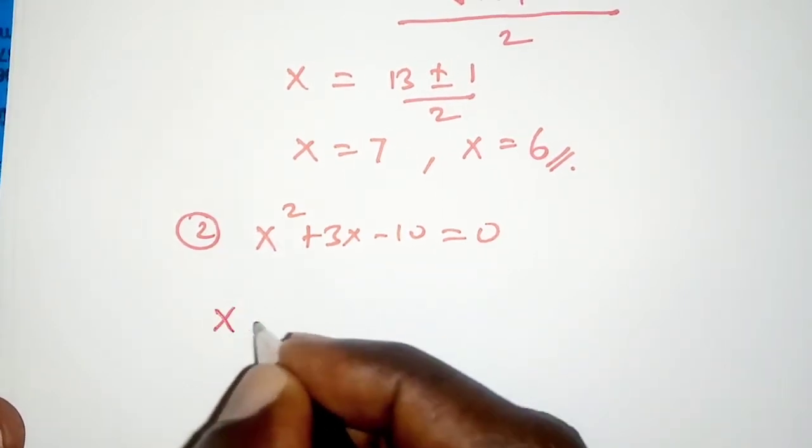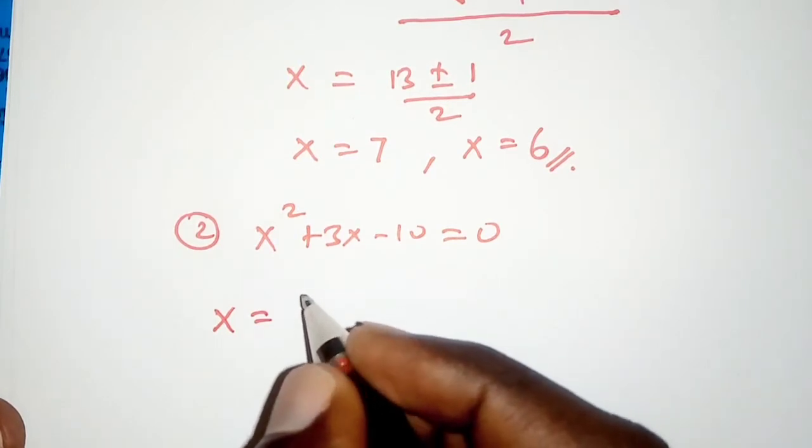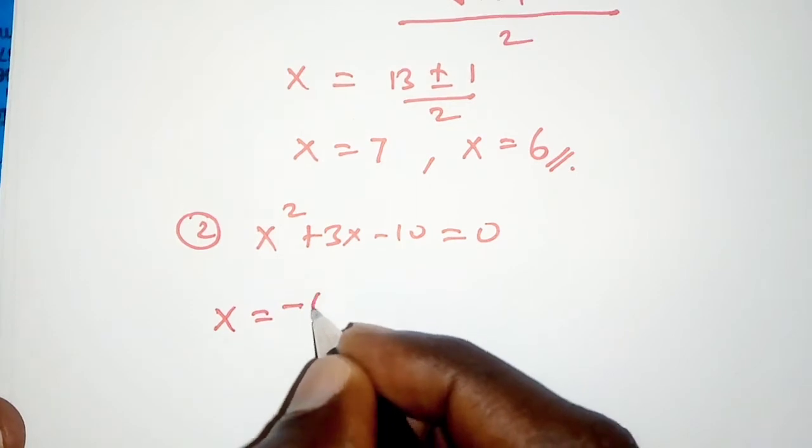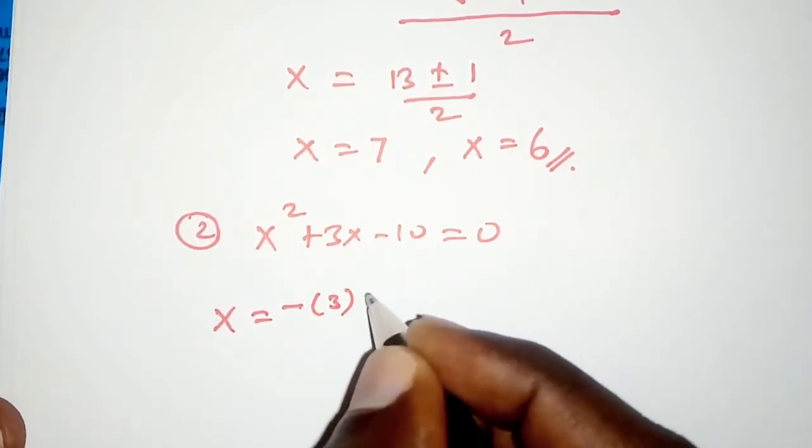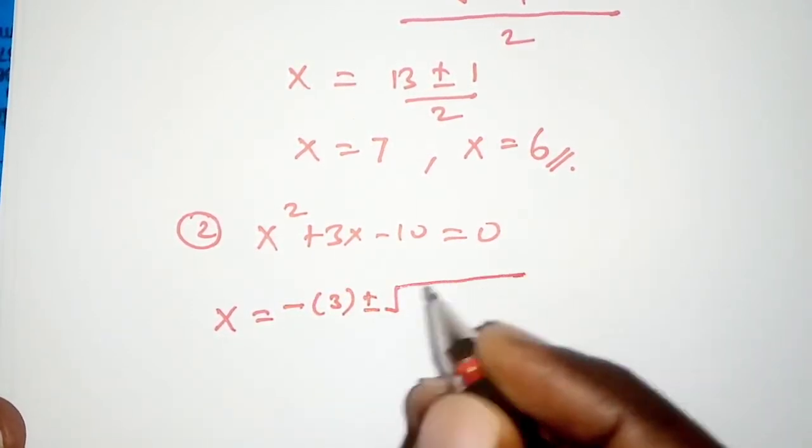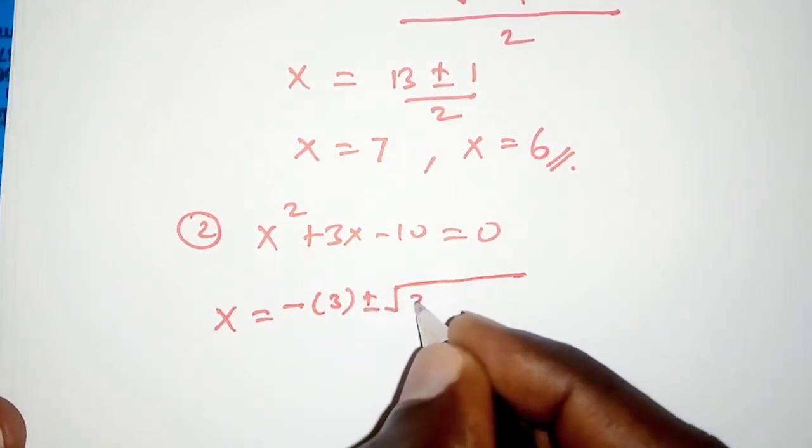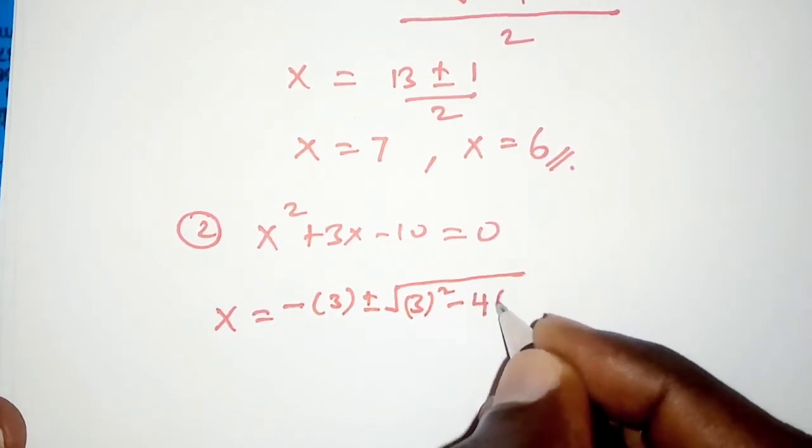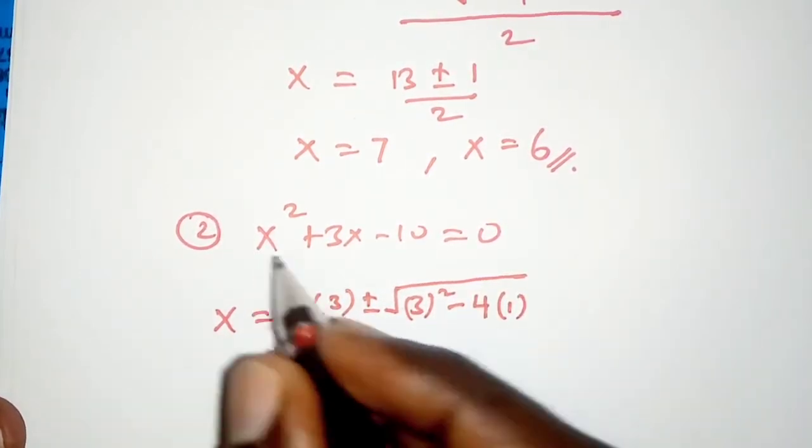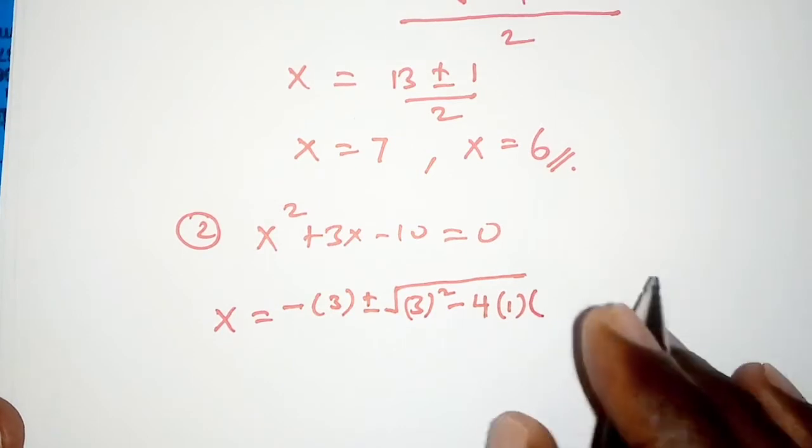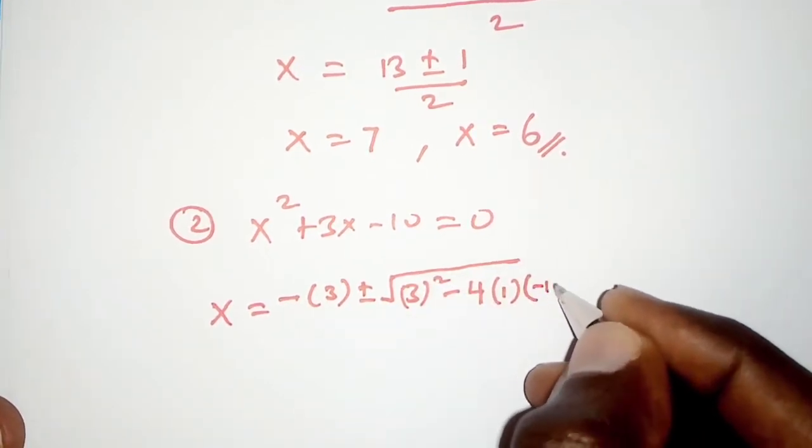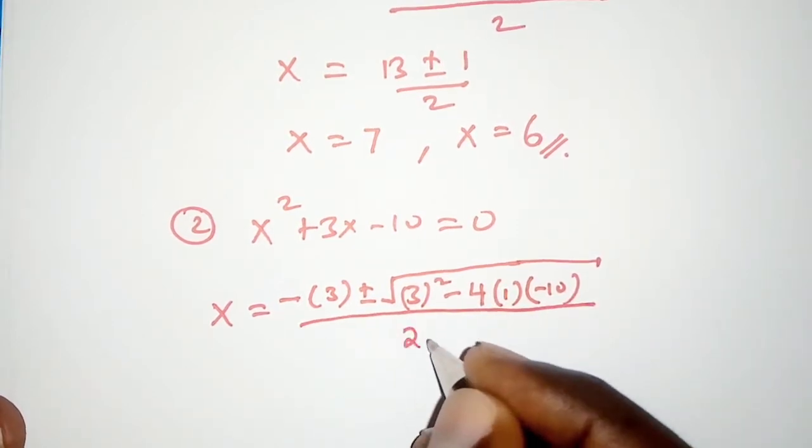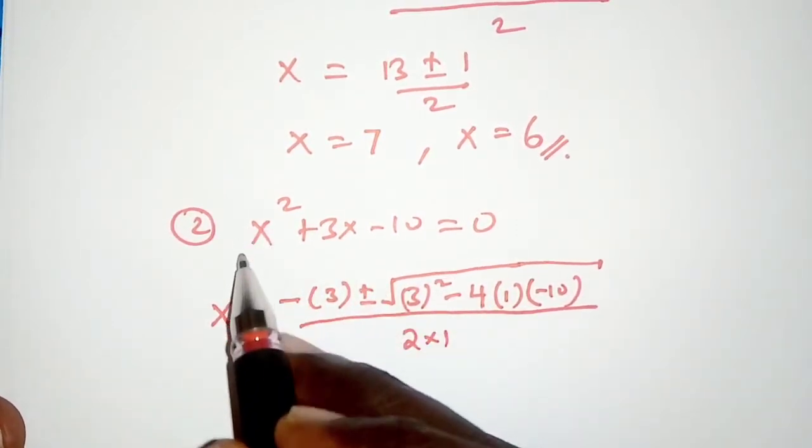So we say x is equal to negative b, and b is 3, plus or minus the square root of b squared and that is 3 squared minus 4 times a and a is 1, coefficient of x squared, times c and c is negative 10, all over 2 times 1 where 1 is the coefficient of x squared.